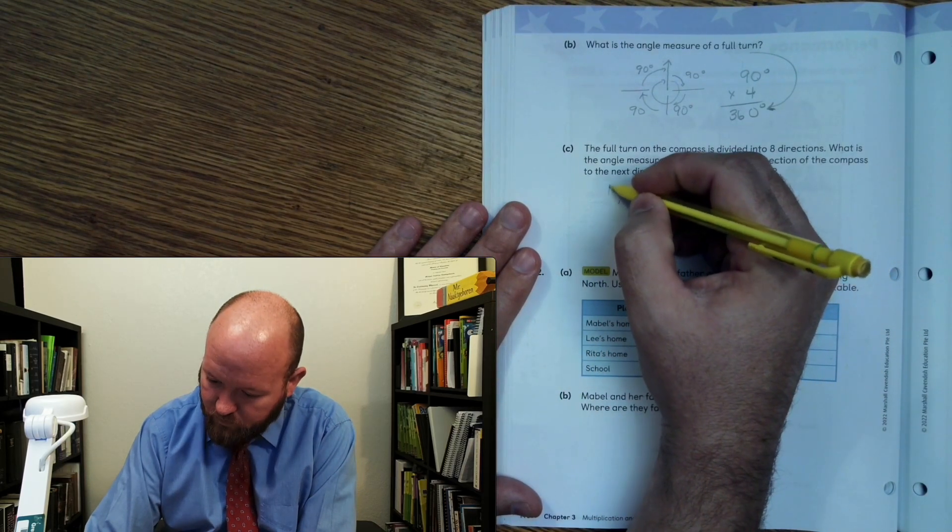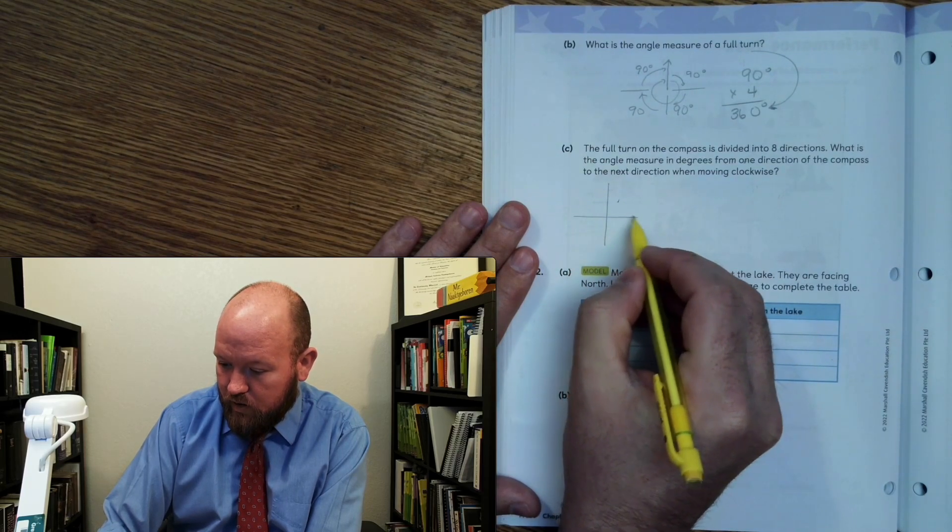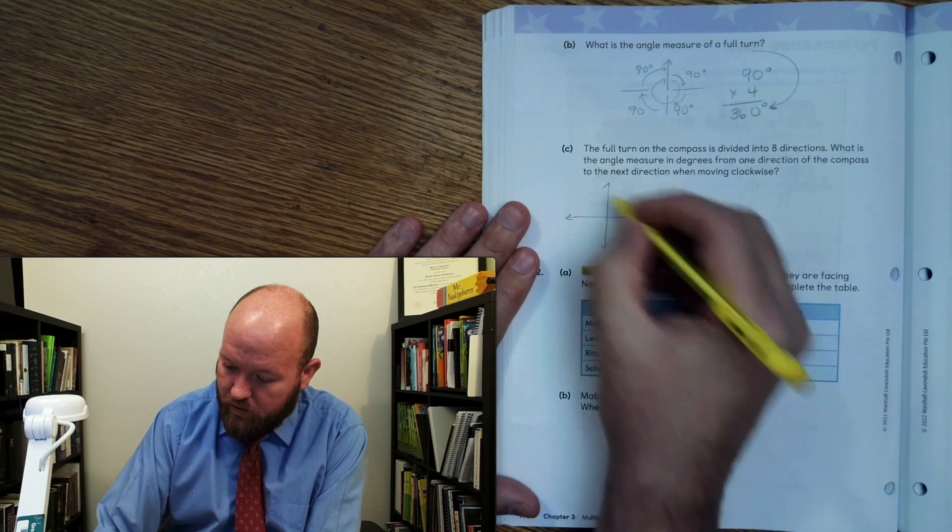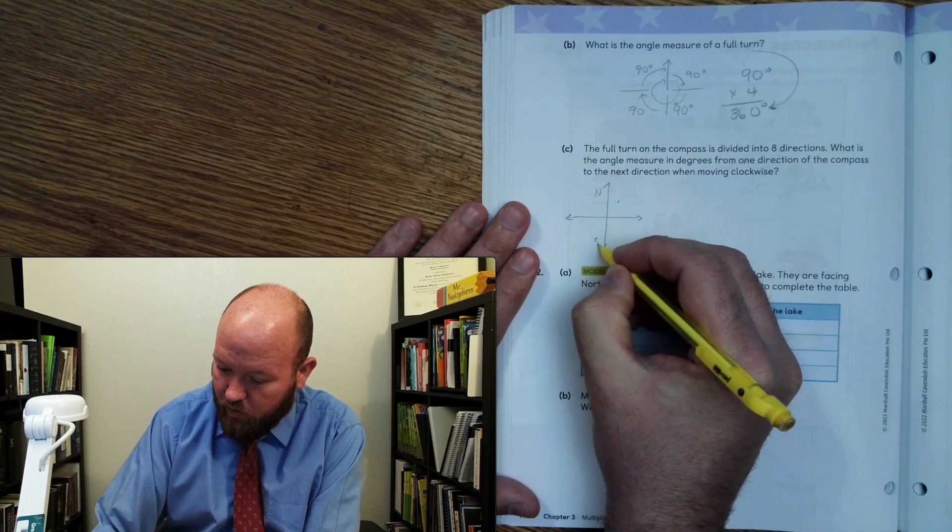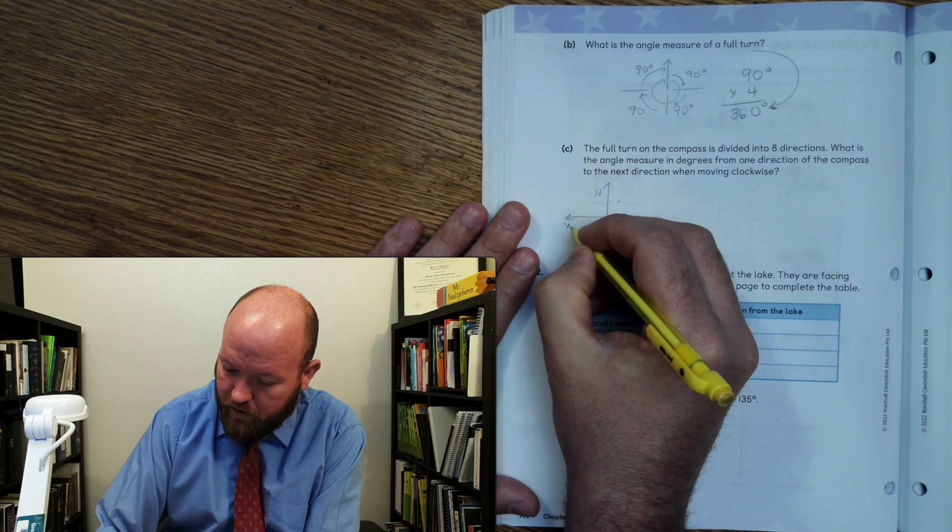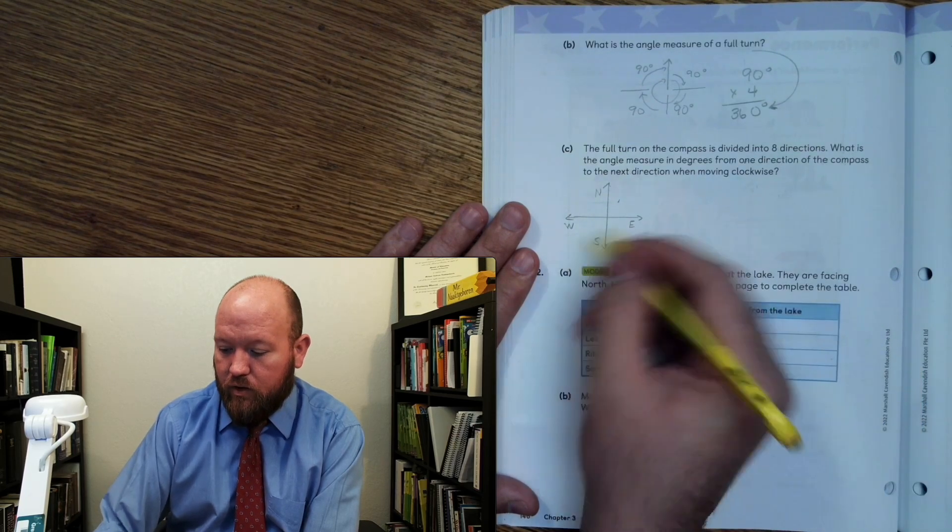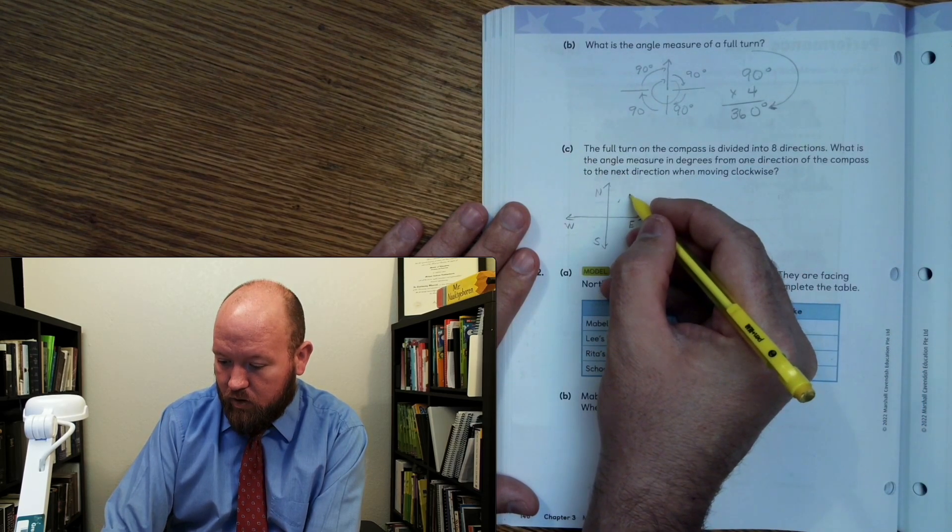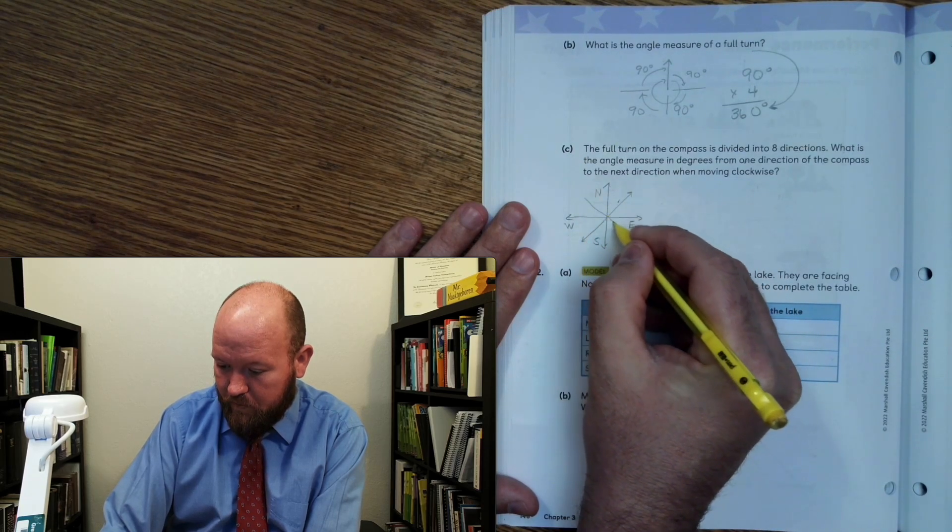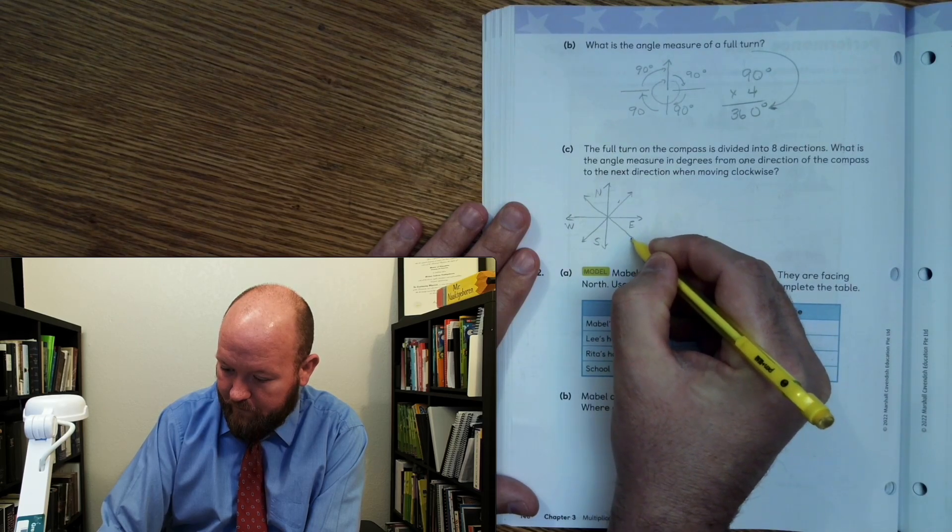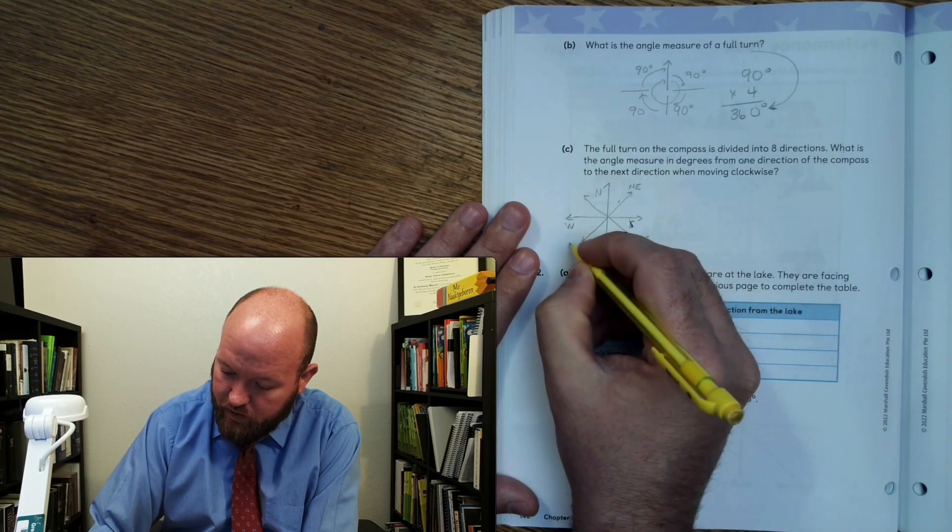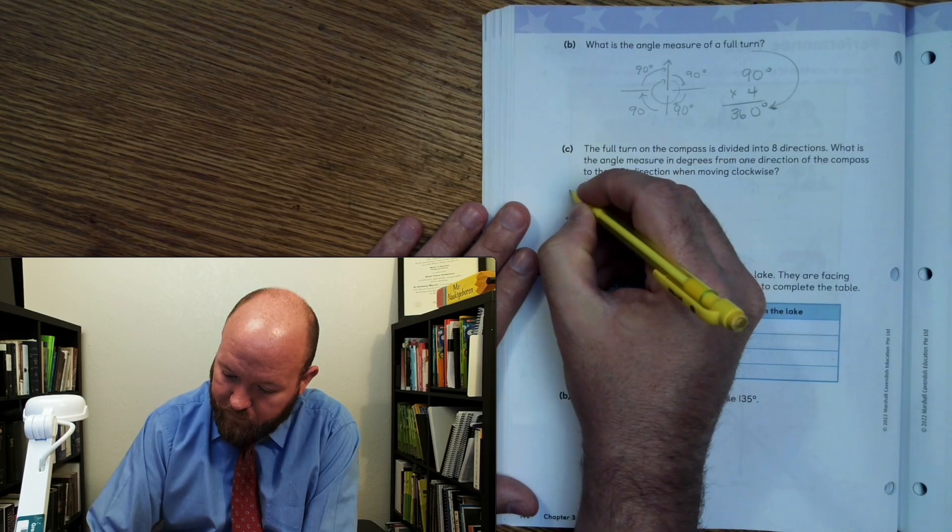All right. So here we have our compass. North, northeast, south, east, west. Now, here it's divided into four parts using the cardinal directions, but then we're going to have these directions as well. So here is northeast, southeast, southwest, northwest.